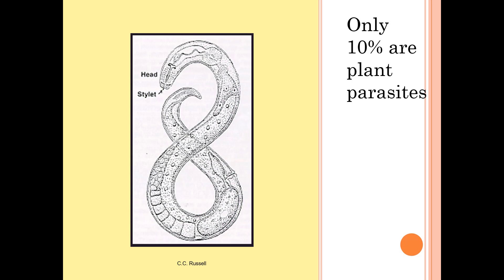Only 10% of nematodes are plant parasites. Most plant parasitic nematodes are soil-borne, but a few will actually feed upon shoots and upper portions of plants.